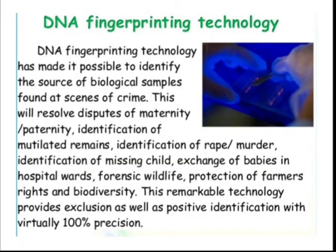DNA fingerprinting technology has made it possible to identify the source of biological samples found at scenes of crime. It can also resolve disputes of maternity and paternity — that means whether a child belongs to a particular parent, either biological father or biological mother. This technology also assists with identification of mutilated remains, rape cases, murders, identification of missing children, exchange of babies in hospital wards, forensic wildlife, protection of farmers' rights and biodiversity.